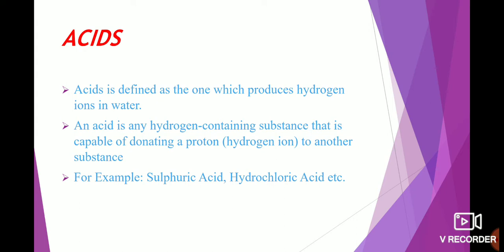Acid is defined as the one which produces hydrogen ion in water. There are different theories which give the definition of acid, like Arrhenius theory, Bronsted-Lowry theory, and Lewis theory. Here we see the definition of acid according to Arrhenius theory. According to Arrhenius theory, acid is defined as the one which produces hydrogen ion in water.